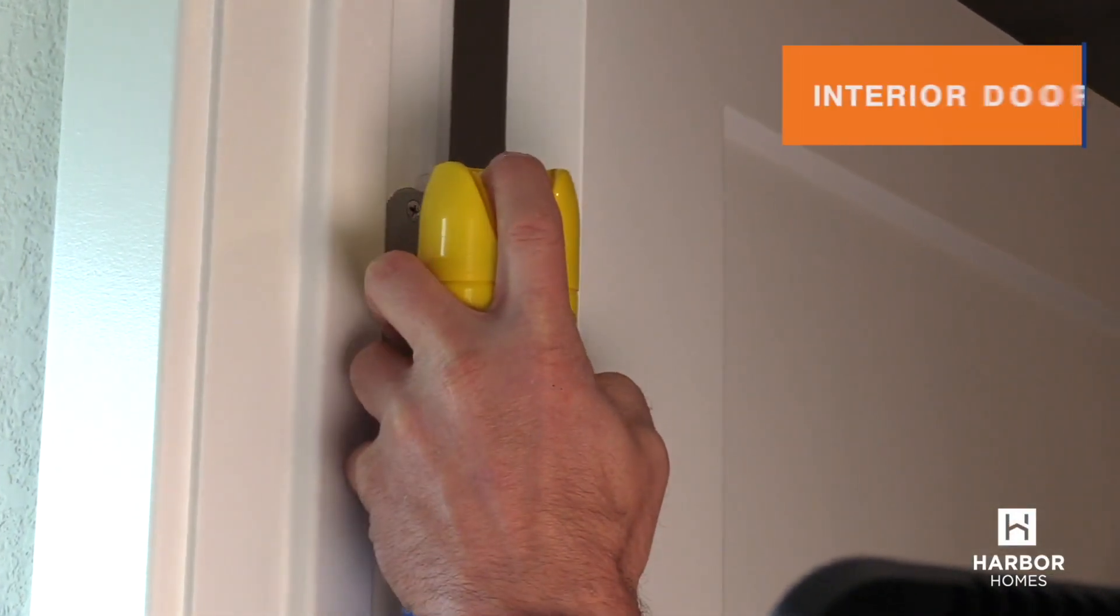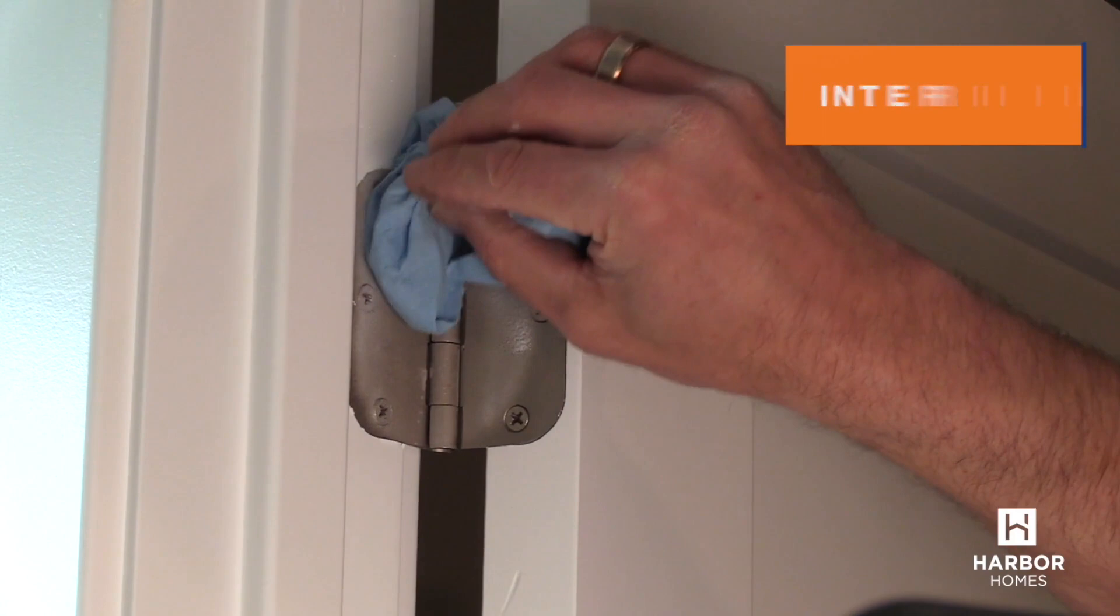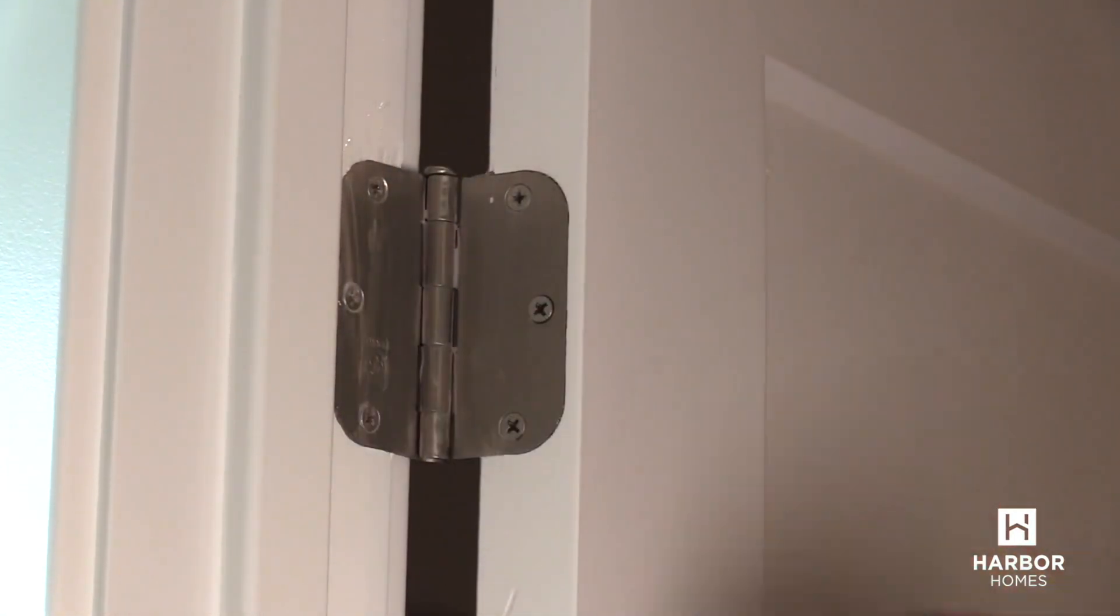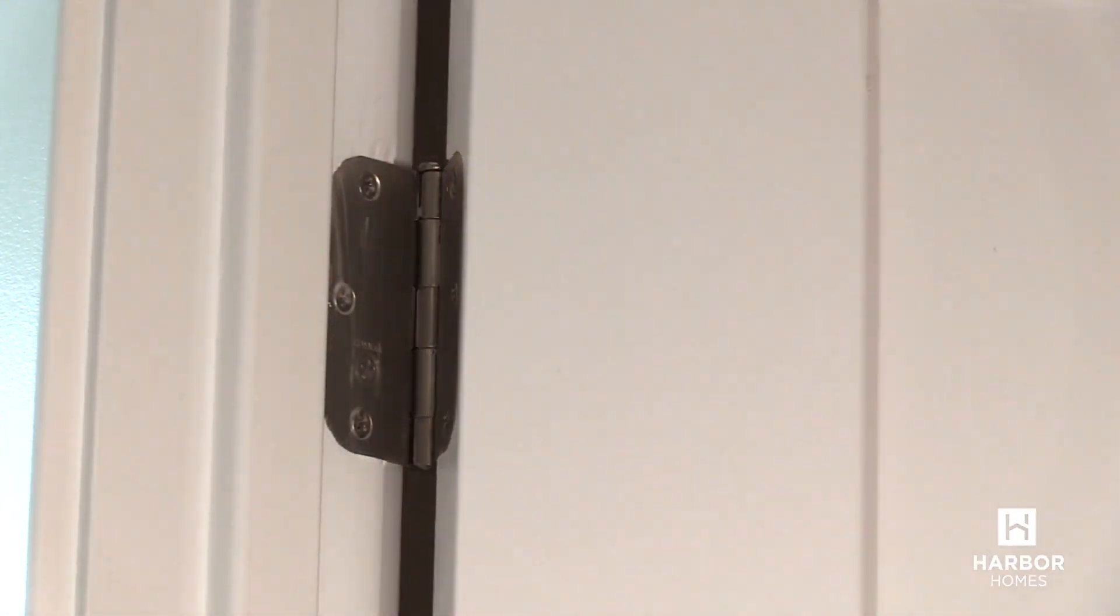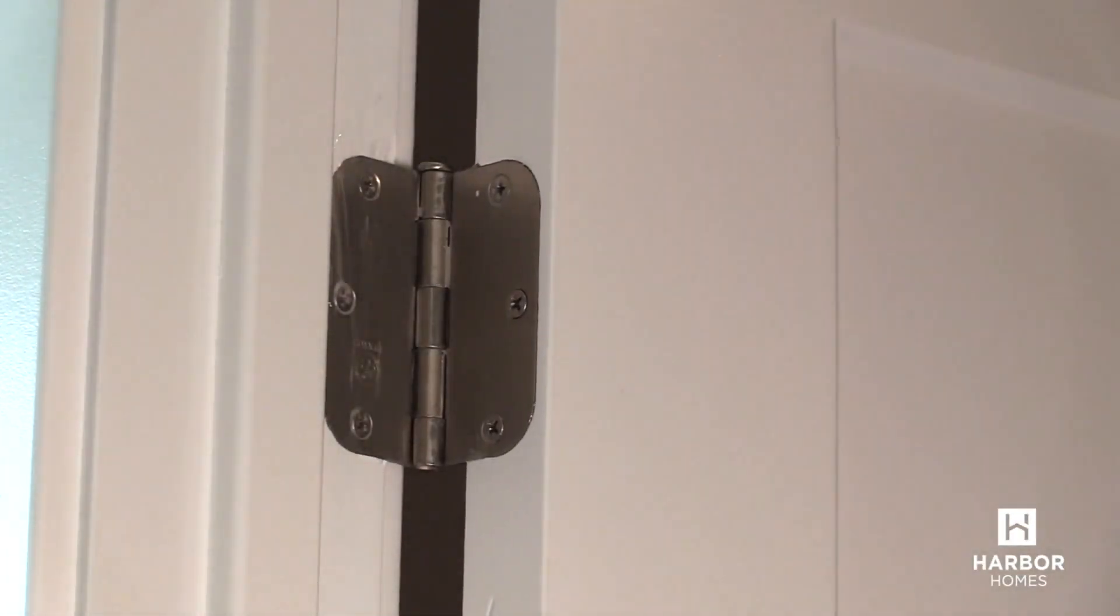Squeaky doors are a quick fix in your home. Spray a silicone spray or a furniture polish with silicone like Pledge on the hinges, open and close the door a few times, and then wipe off any excess. It's that easy.